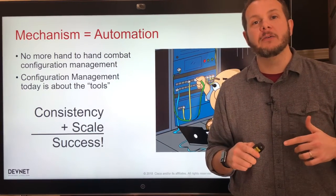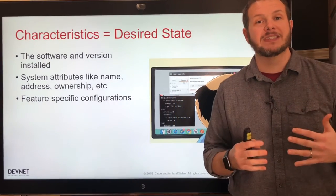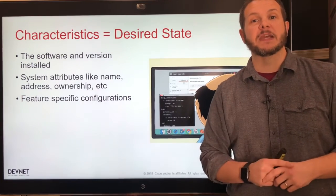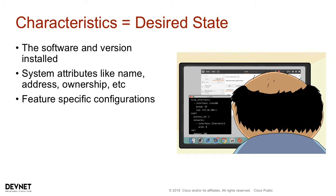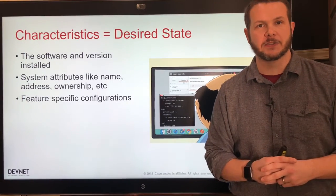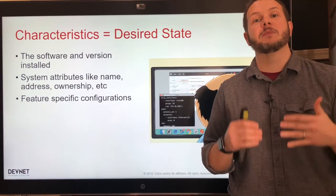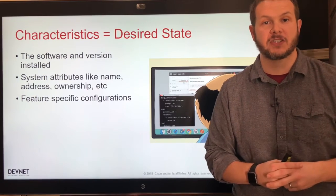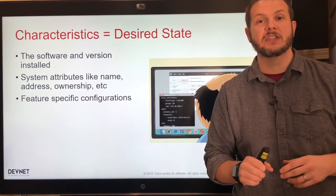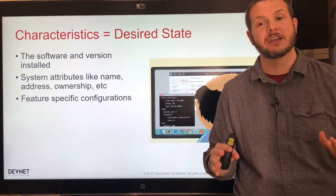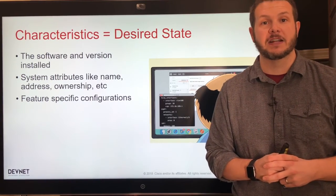What are we trying to configure? Those are the characteristics — our intention, our desired state of our network. The characteristics may include the software and version installed on our platforms, system attributes like the name, location, and ownership information, as well as all of the feature configuration details. Which routing protocol you want to run, how that routing protocol will be configured, interface configurations, how you label descriptions, what settings are standard — all of those are the characteristics of the desired state.